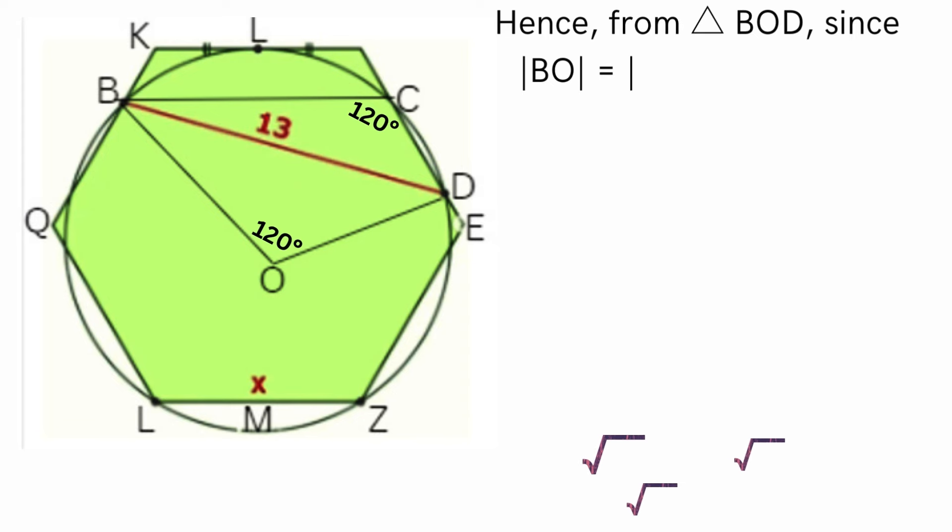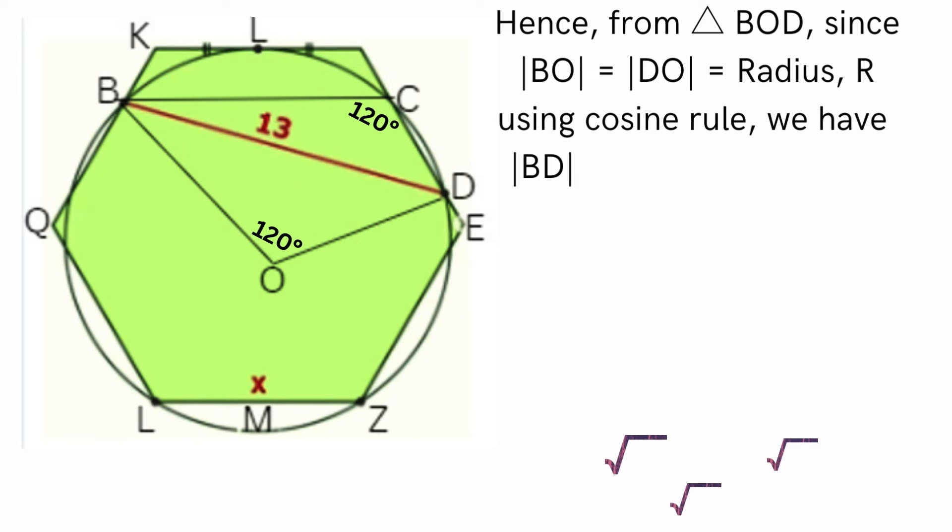From triangle BOD, since BO equals DO equals radius R, using cosine rule we have...